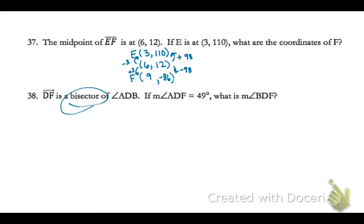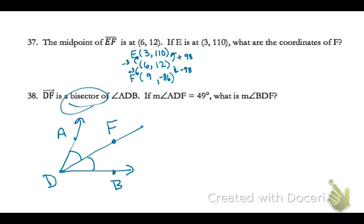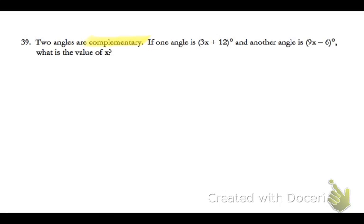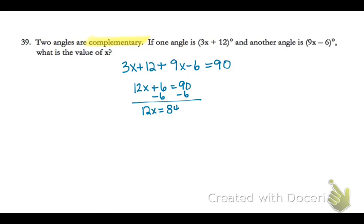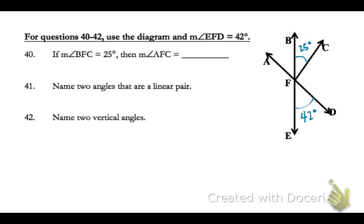For 38, DF is a bisector, meaning it's cutting the angle in half. So if ADF is 49 degrees — two angles are complementary, meaning they add up to 90 degrees, so you add the two angles and set them equal to 90, then solve for X by combining like terms. So the first thing is marking up your angles: BFC is 25 and EFD is 42. They all together make a straight line at 180 degrees, so that's 113.